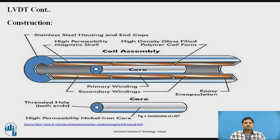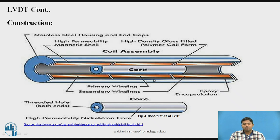Coming to the construction: as mentioned, there are three coils — one primary and two secondary. A source is given to the primary coil. There is a core made of a very high permeability material, such as soft iron or similar material, with extra coating on it. High-density, glass-coated coils are used here. This core moves within this construction.